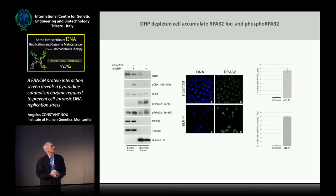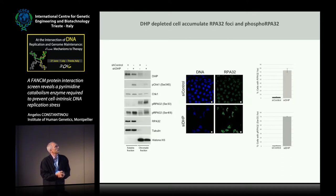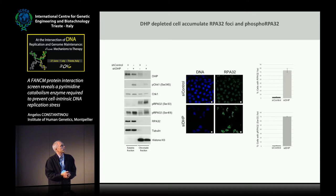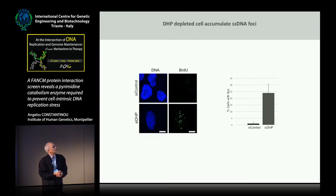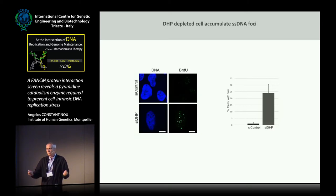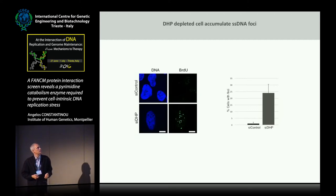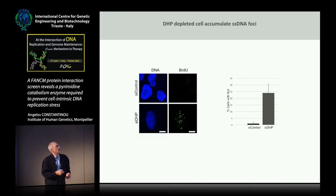We looked for evidence of ATR checkpoint signaling and observed more checkpoint phosphorylation in the soluble fraction and more RPA phosphorylation in the chromatin fraction of DHP-depleted cells. By immunofluorescence staining, we detected accumulation of RPA foci and phospho-RPA foci in DHP-depleted cells. Finally, we uniformly labeled cells with BrdU to detect single-stranded DNA—BrdU is detected only in single-stranded form under native conditions—and we observe much larger regions of single-stranded DNA in cells lacking DHP.